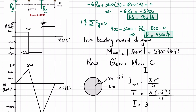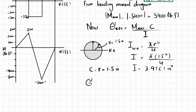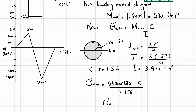Substituting r = 1.5 into I = π·r⁴ / 4 gives I = 3.9761 in⁴. The distance c from the neutral axis to the outermost fiber equals r = 1.5 inches. Plugging into sigma_max: M = 5400 lb·ft × 12 (to convert to inches), c = 1.5, divided by I = 3.9761. The maximum bending stress equals 24.4 ksi.